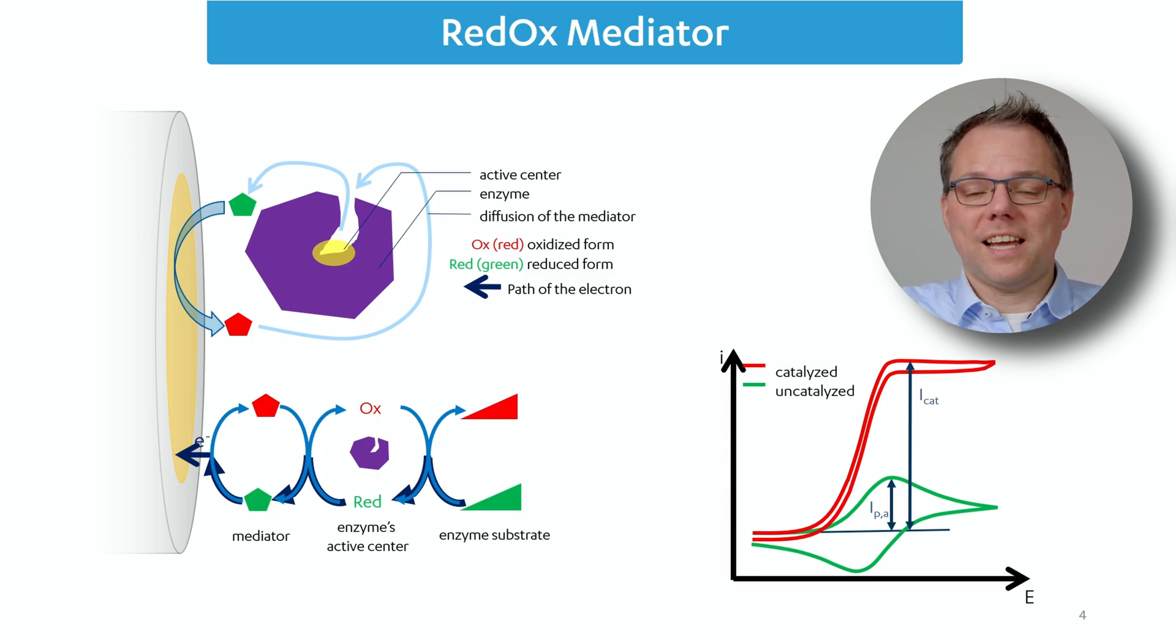Ideally it does that by shuttling between them. So basically we're looking for the last circle on the bottom left. Only if the complete system is arranged and works will our CV have a very characteristic shape.